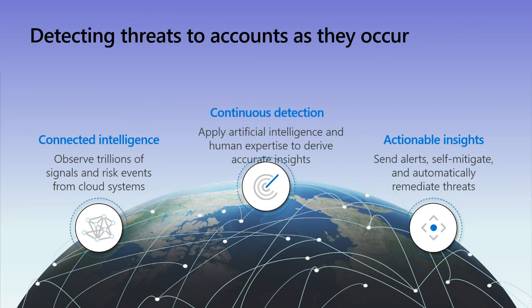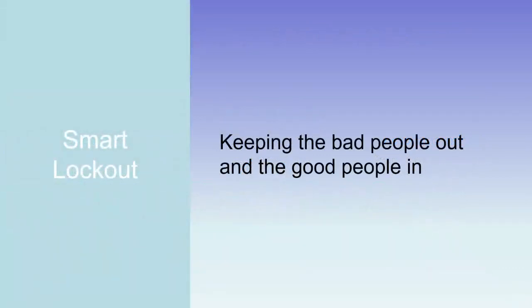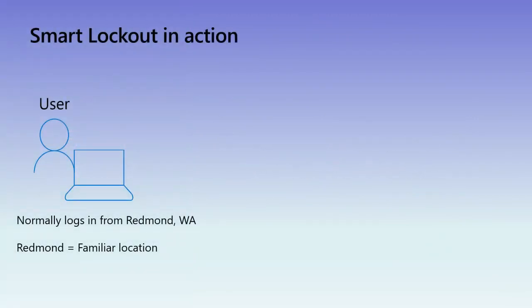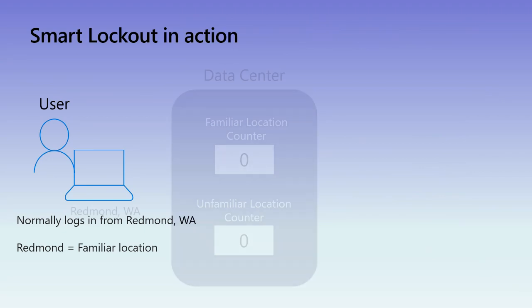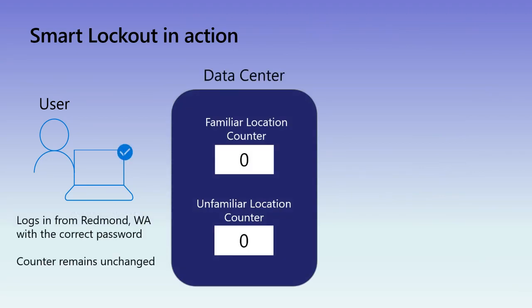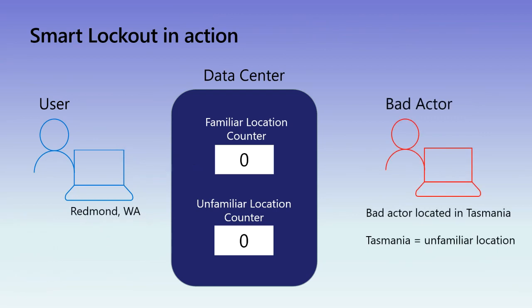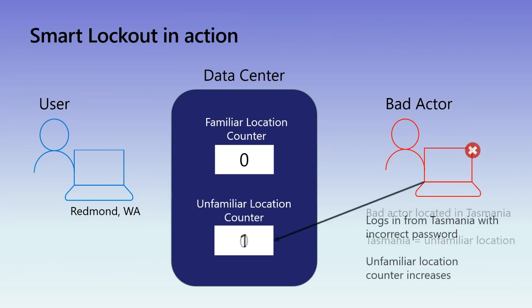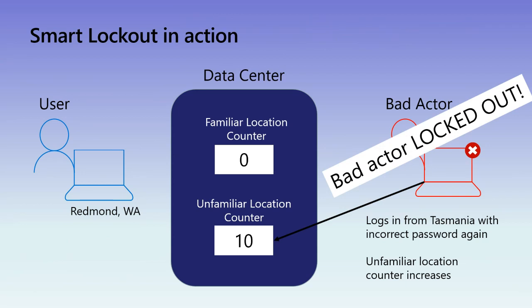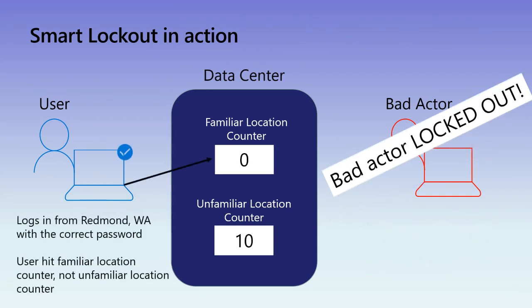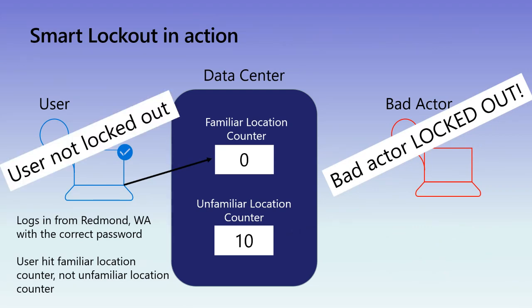One of the tools that's built in is Smart Lockout, which is an awesome bit of kit — bad people out, good people in. A user tries to sign in from Redmond in Washington, his normal location. If he signs in with the correct password his familiar location counter stays the same; when he fails it goes up, when he logs back in it goes back down to zero and he's in. If a bad actor from another totally unfamiliar location — a new ISP, a new IP address — tries to sign in, the counter goes up and up and up and eventually he gets locked out, while you in the familiar location can still sign in.